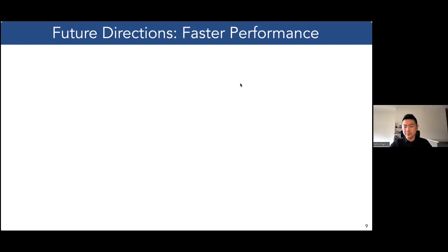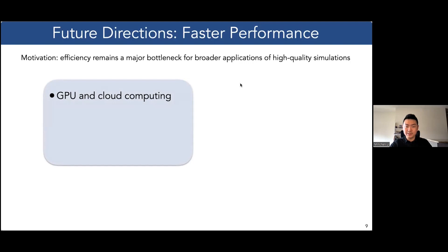For future works, we can further improve the efficiency of simulation, as efficiency is still a major bottleneck for high-quality simulations to be applied in more application scenarios. From the HPC side, we can keep exploring GPU accelerations and cloud computing. On the scientific computing side, we can continue to investigate advanced solvers and smarter temporal and spatial discretization strategies.